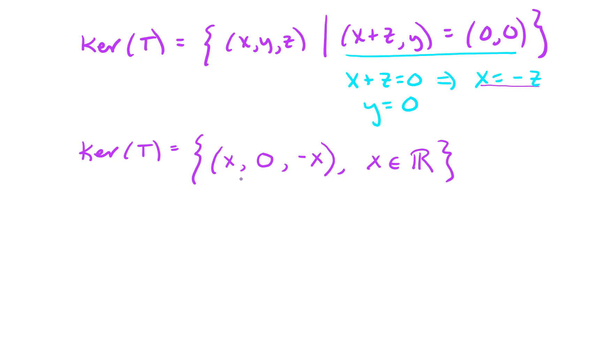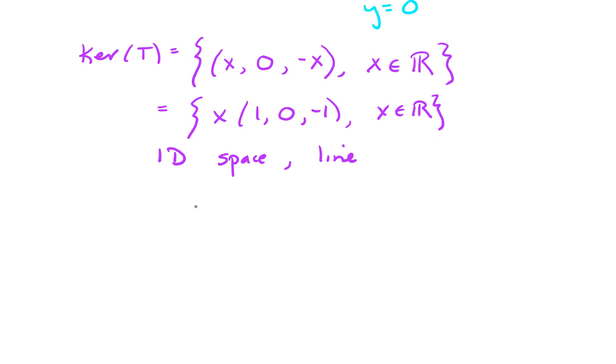You might be wondering what this space looks like. Well, first of all, notice that this is the same as the set of vectors spanned by (1, 0, -1). So it's a one-dimensional space, it's a line. If we try to represent that, here's our x, y coordinate system. The kernel consists of scalar multiples of the vector that live on (1, 0, -1). So if we come out 1 in the x direction, 0 in the y, and then we go down 1 in the z, we're pointing out down that direction and then back into the paper. So the kernel lives along that line.